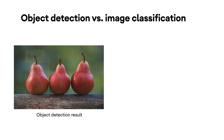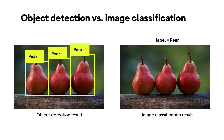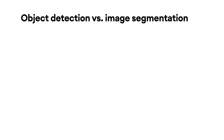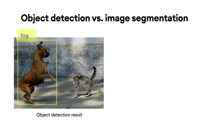So how is object detection different to image classification? Well, object detection tells you the location of the object it has detected, but image classification only returns to you a list of labels, which means you may know that an object is in an image, but you may not know where it is. There's another more advanced computer vision task called image segmentation.